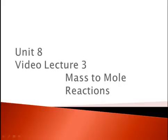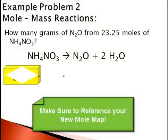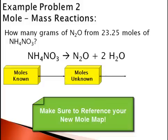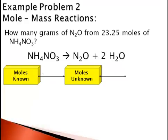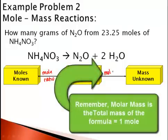Unit 8, Video Lecture 3: Mass-to-Mole Reactions. How many grams of N2O can be made from 23.25 moles of NH4NO3? We're going to use the parts of our mole map where we're starting on our moles of our known substance, and we have to go to our moles of our unknown substance using our mole ratio. Then we can go from our moles of the unknown substance to our mass of our unknown substance by using our molar mass.